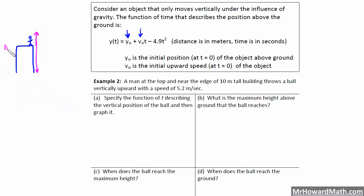Let's note 10 meters. The problem asks us to specify the function of t describing the vertical position of the ball, and then graph it. We're going to use our formula and plug in y₀ and v₀ from our problem situation. The minus 4.9t² term comes from gravity — that's not ever going to change for any problem situation using meters and seconds.